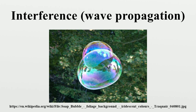Interference can also be seen in everyday phenomena such as iridescence and structural coloration. For example, the colors seen in a soap bubble arise from interference of light reflecting off the front and back surfaces of the thin soap film. Depending on the thickness of the film, different colors interfere constructively and destructively.